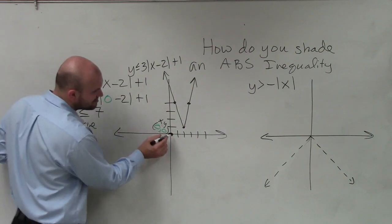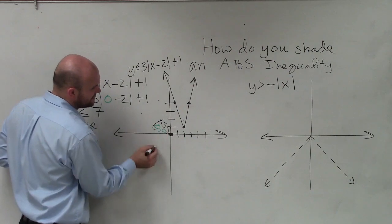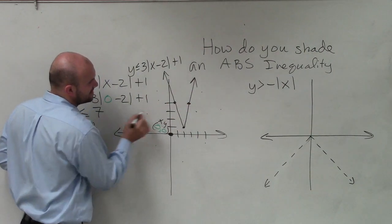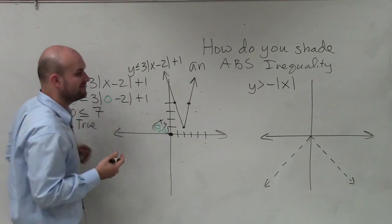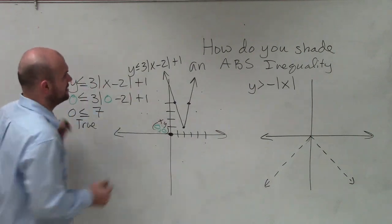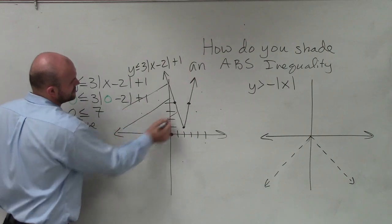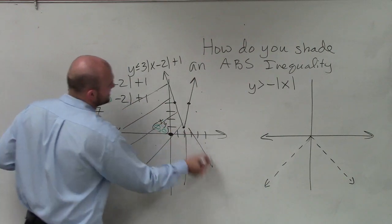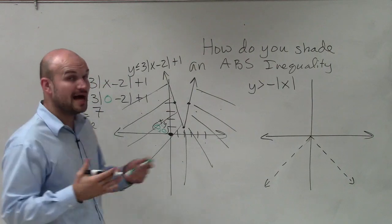Since this point is true, that means every single point that is below my inequality is also going to be true. It would take forever to plot all those little points, so what we do to represent all those solutions is just draw some shading lines. And there we go.